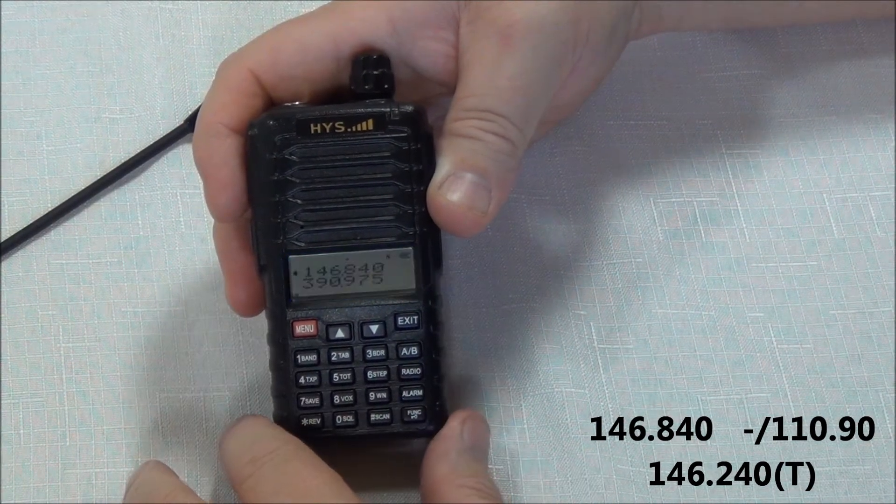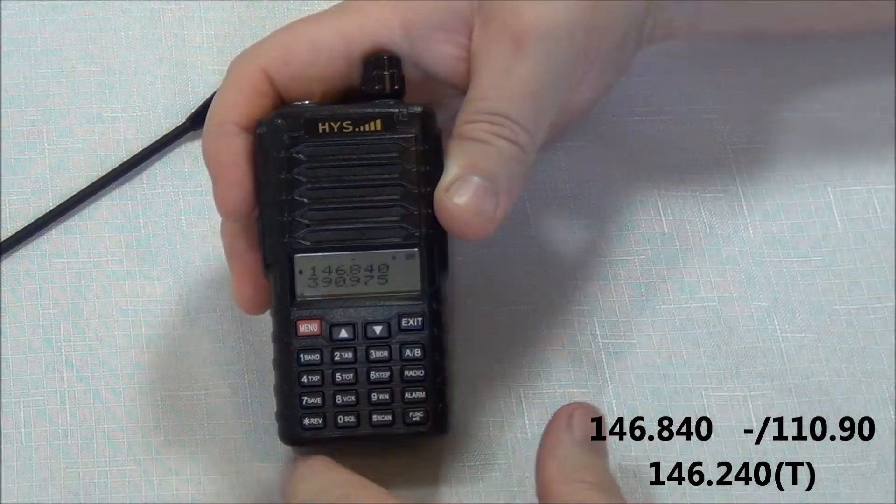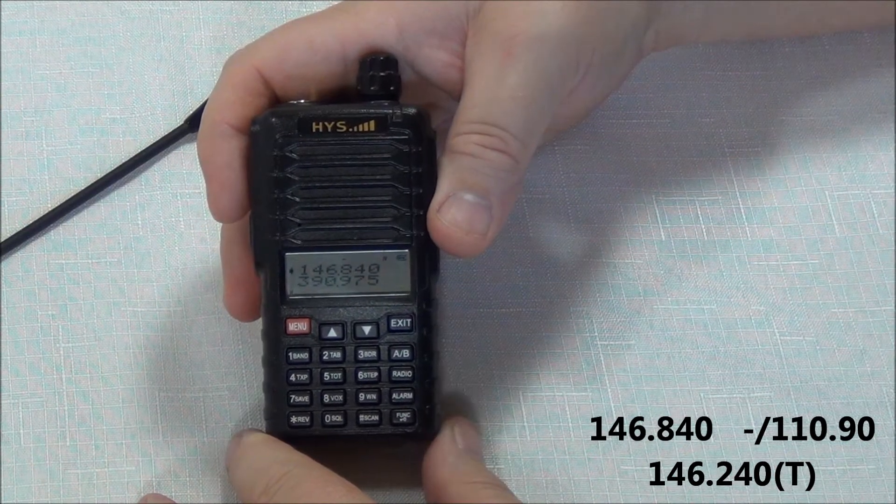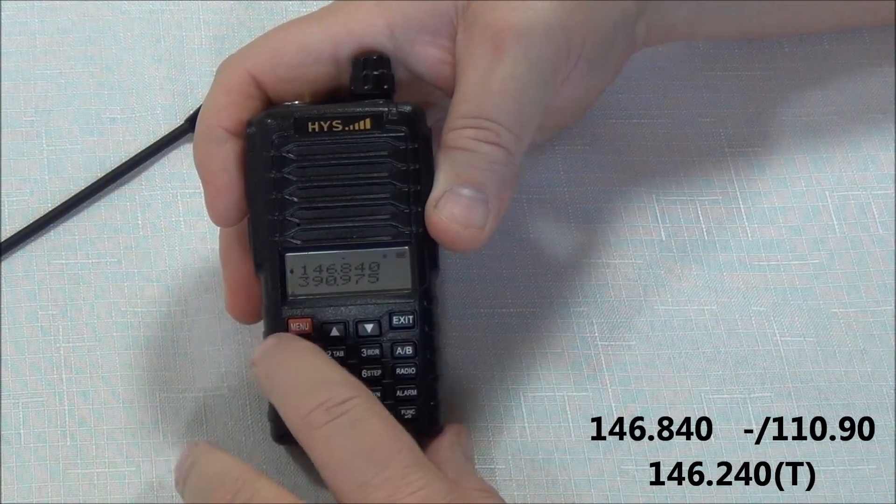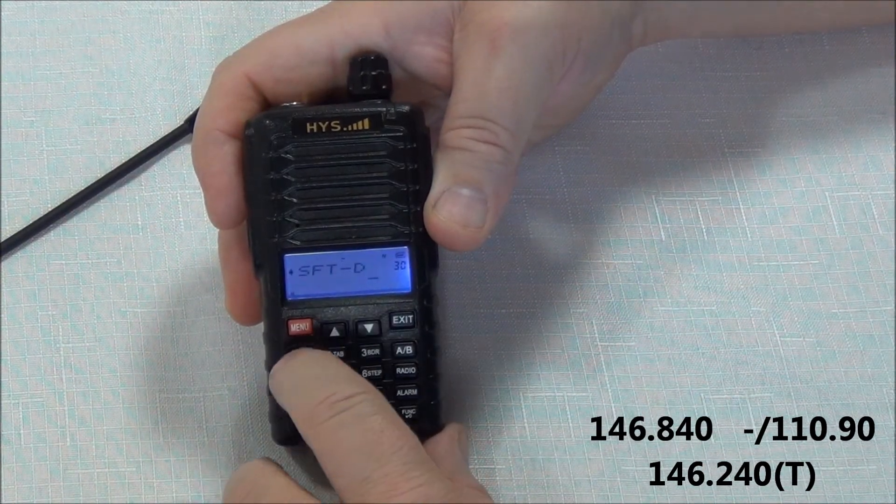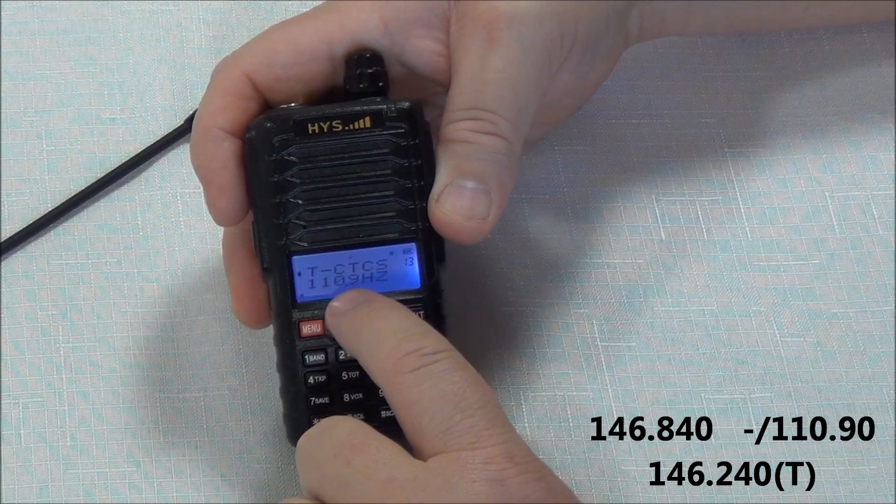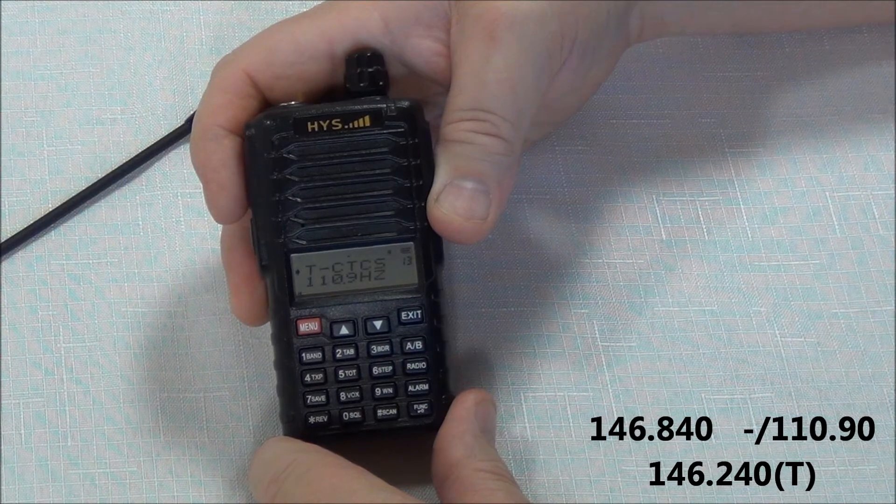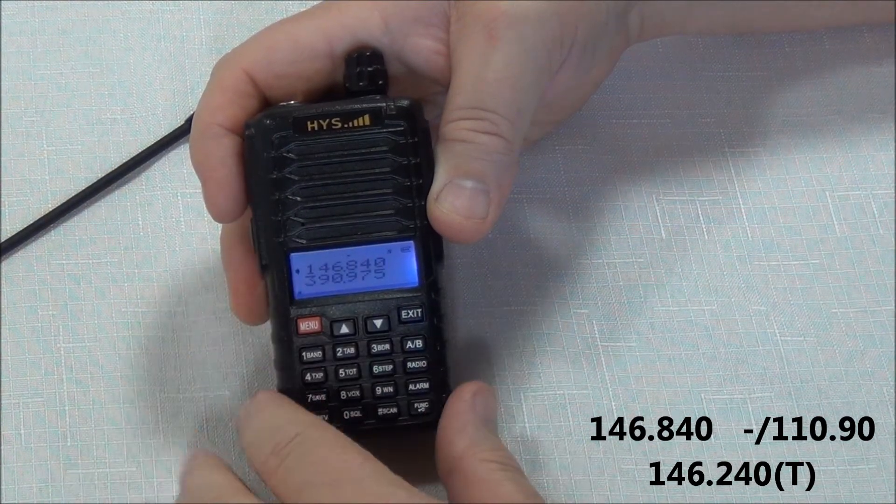Okay, so now we need the tone, the PL tone or the squelch tone. And this is listed for mine as 110.9. So that is controlled on menu number 13. So let's go to menu 13. There we have the PL tone 110.9 hertz. So that is correct for this particular repeater.